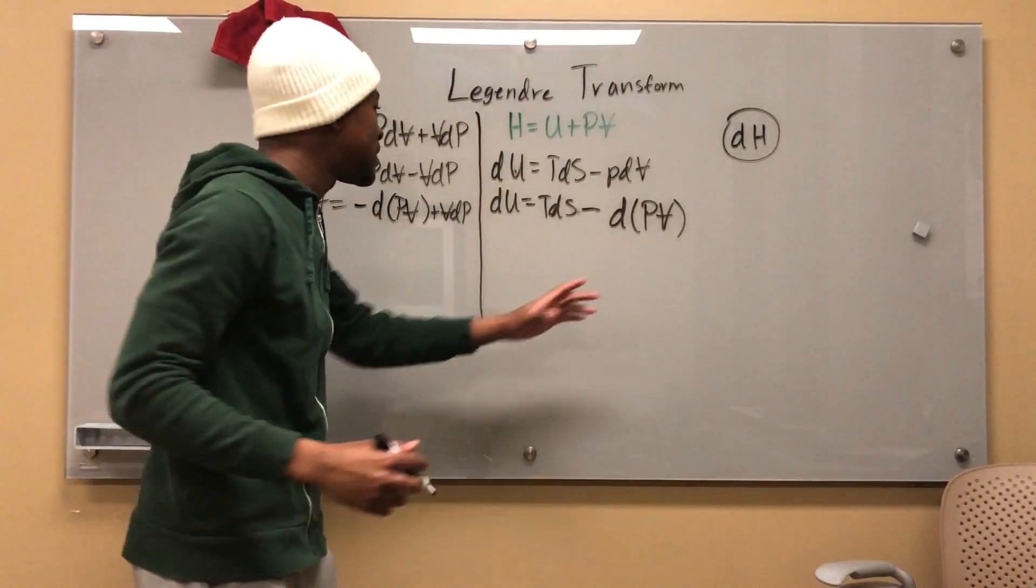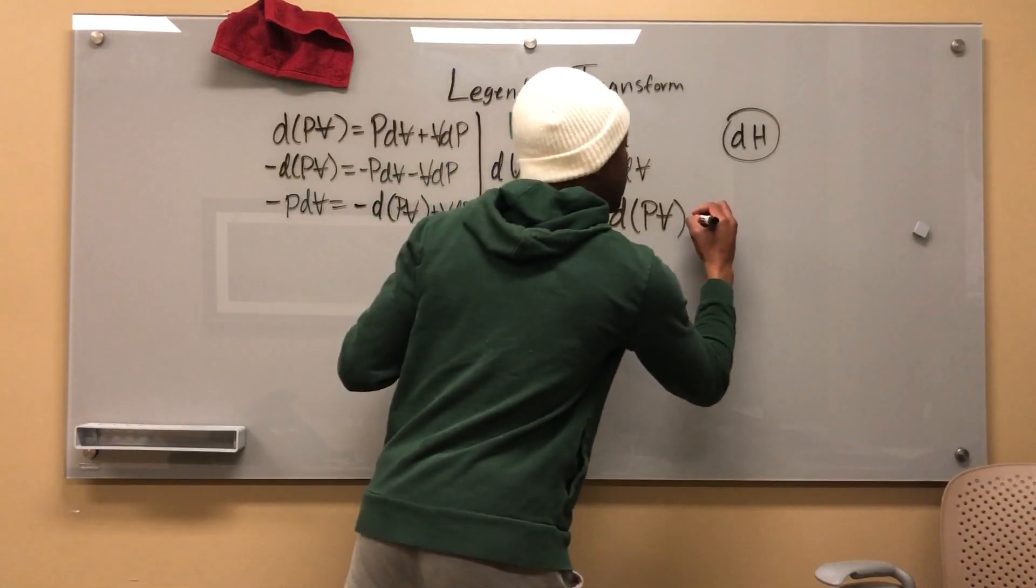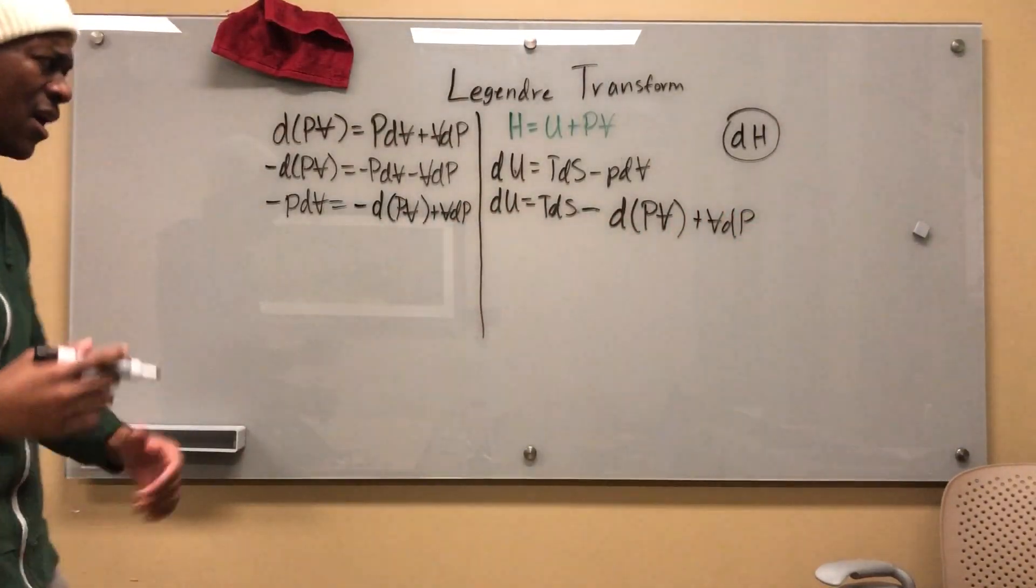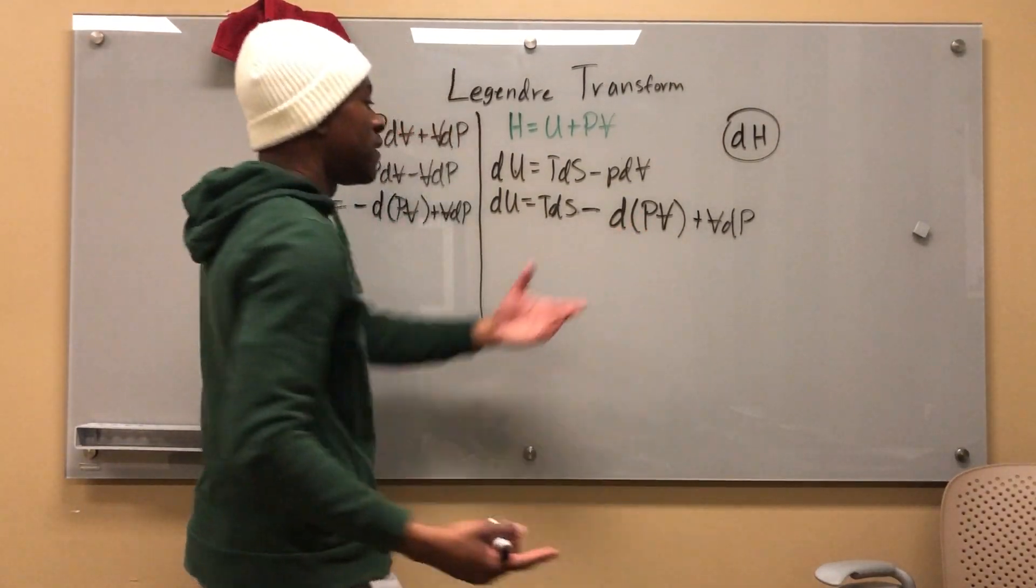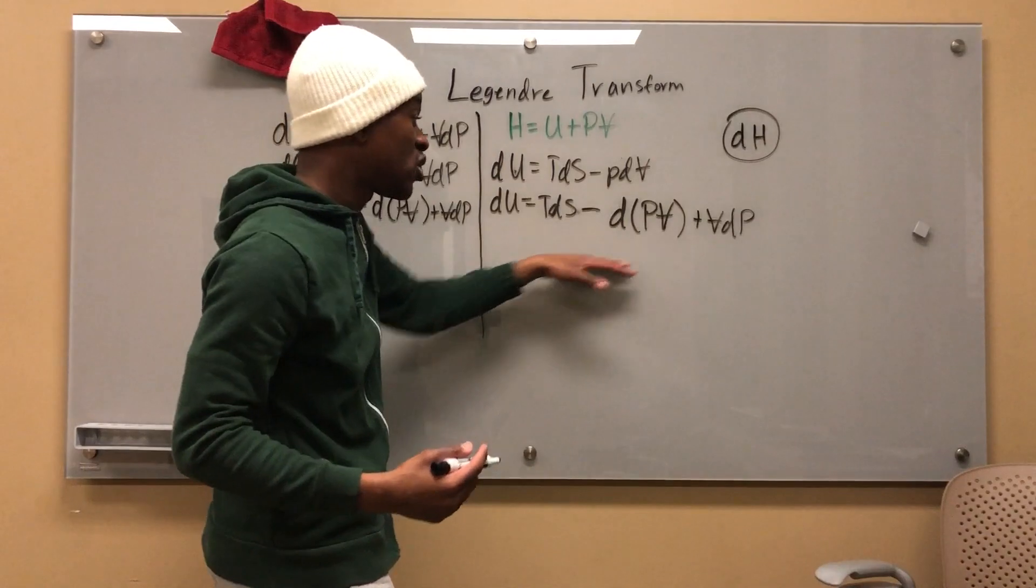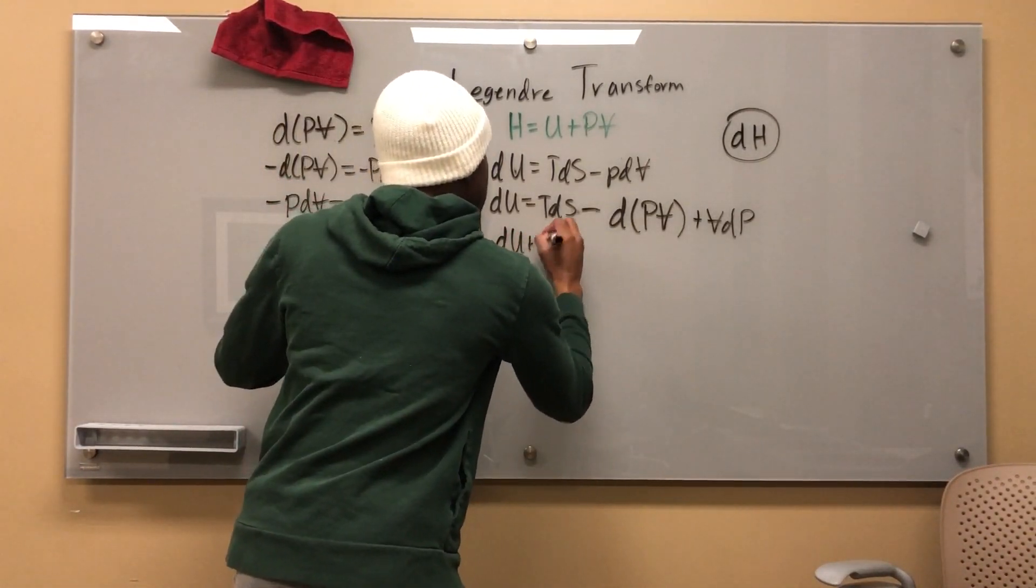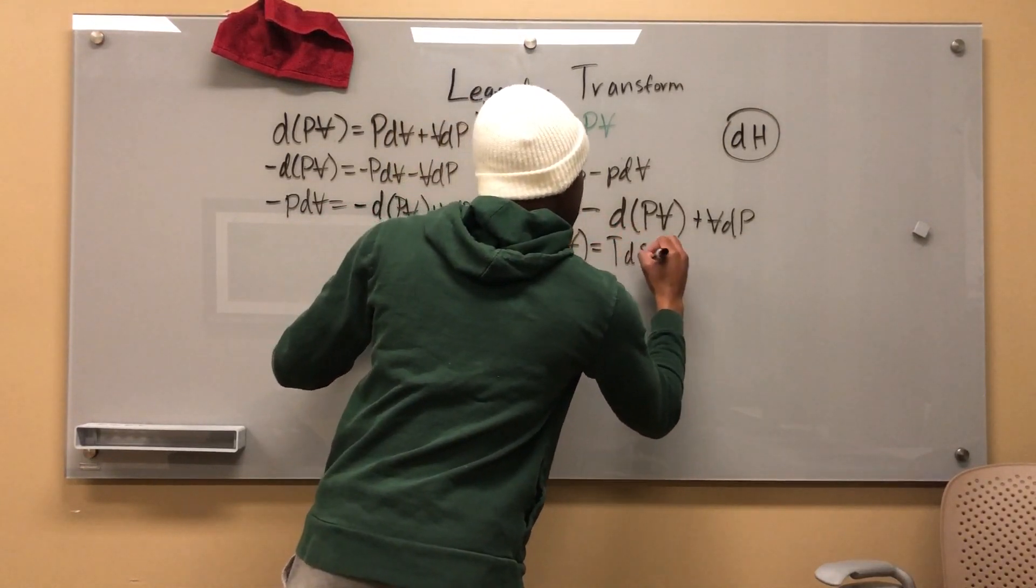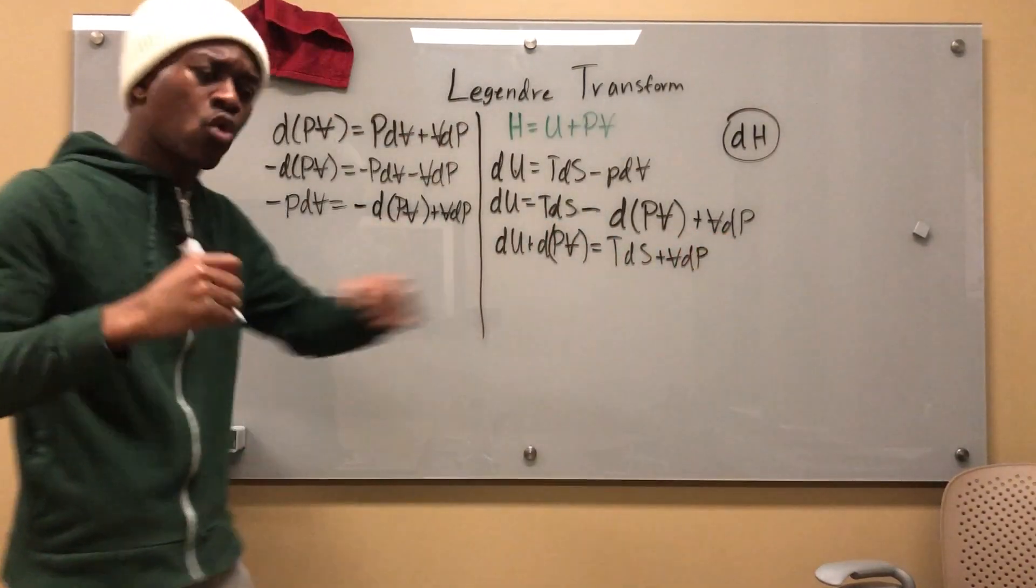So I'm going to add this VdP here. Now, I sort of like what's going on. I'm going to add d(PV), this term right here, to both sides. So dU plus d(PV) is equal to TdS plus VdP. Cool.